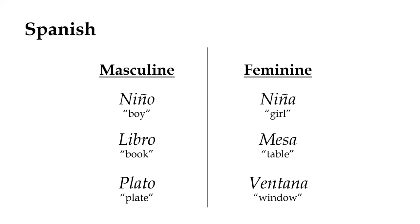For a relatively clean and simple example, Spanish classes all of its nouns as either masculine or feminine, the former usually ending in O and the latter most often ending in A. However, and very importantly, this alone isn't enough to qualify it as grammatical gender.